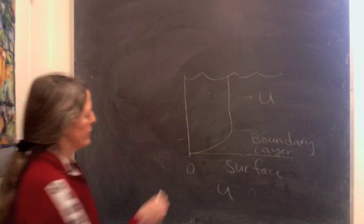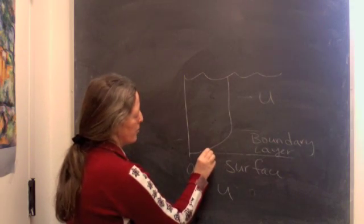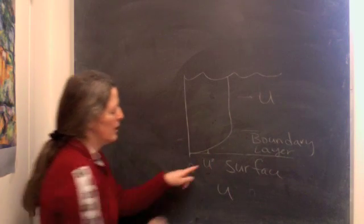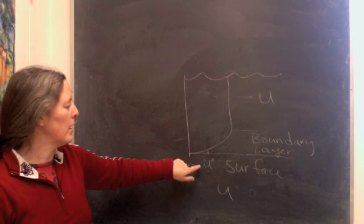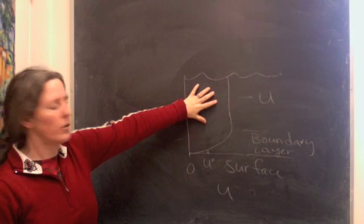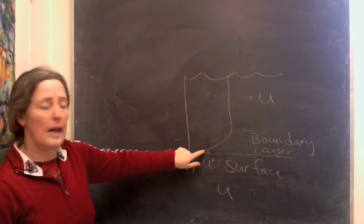Within that boundary layer, there's a point where the flow speed is so low that the fluid goes from being turbulent in the bulk of the flow to laminar.